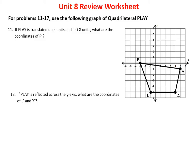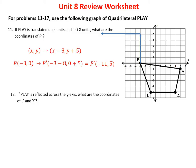In problem 11, we look at quadrilateral PLAY. It says it's translated up 5 units and left 8 units. What are the coordinates of P prime? Going up 5 and left 8 takes us off the graph, so I'll use coordinate notation. Up is the y-axis, so it's y plus 5; left 8 means x minus 8. Plugging in P at (−3, 0): negative 3 minus 8 and 0 plus 5 gives P prime at (−11, 5).